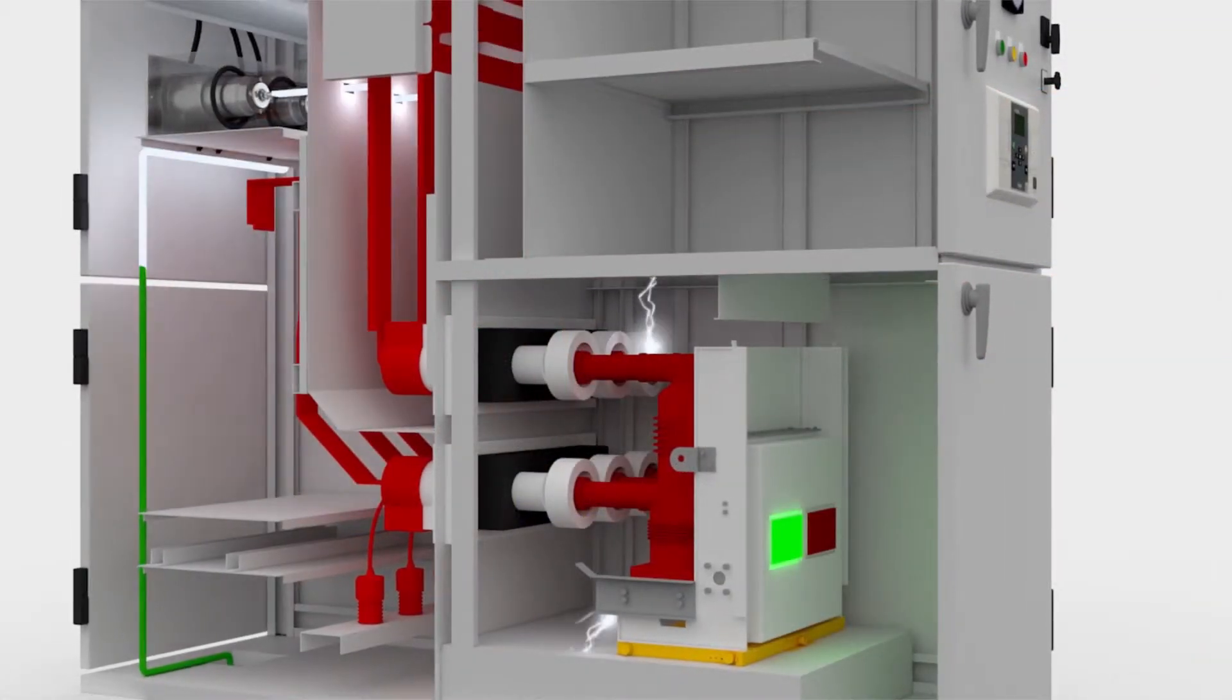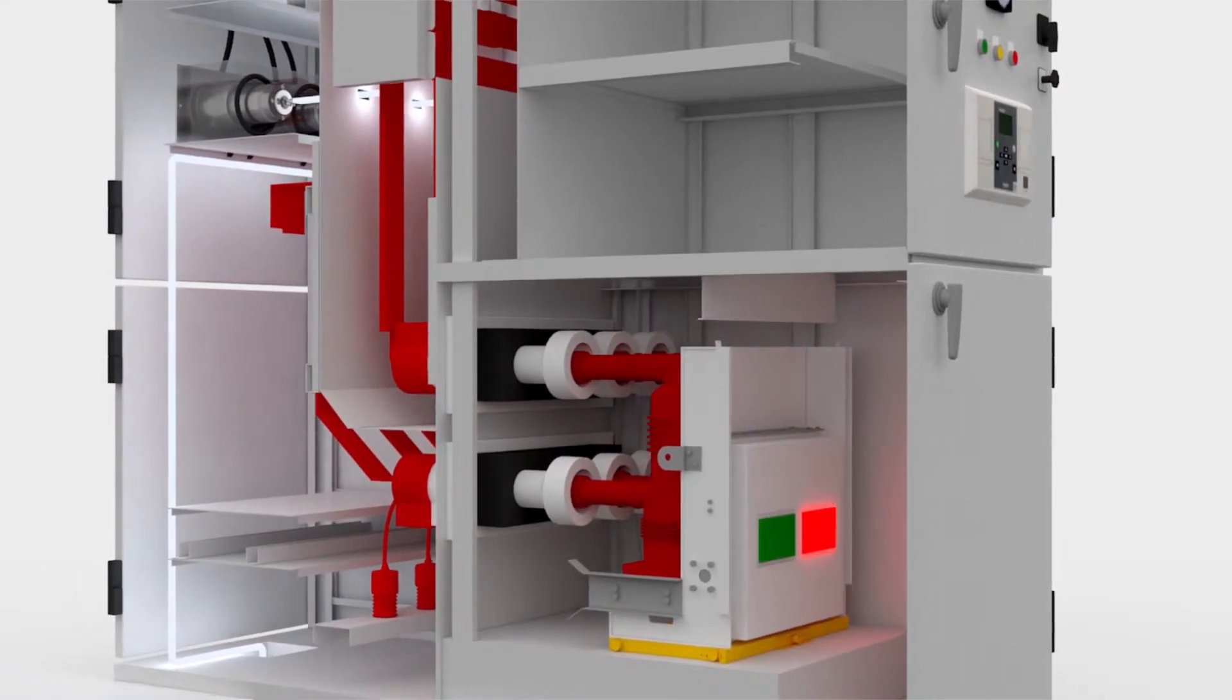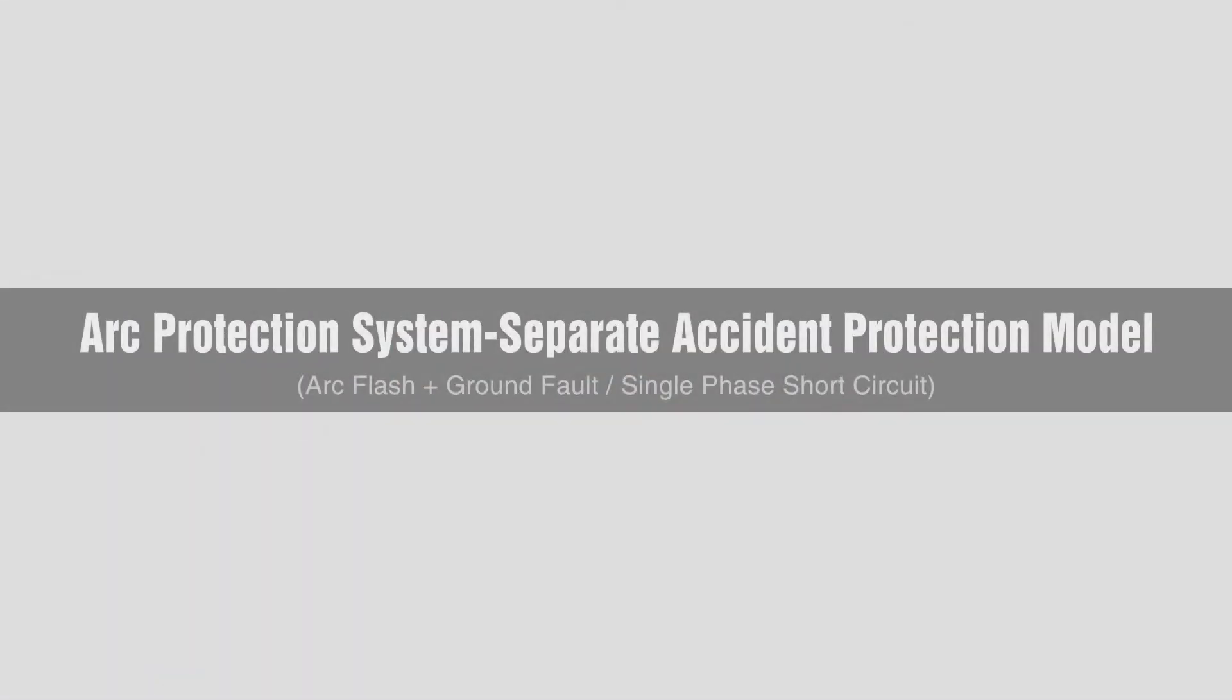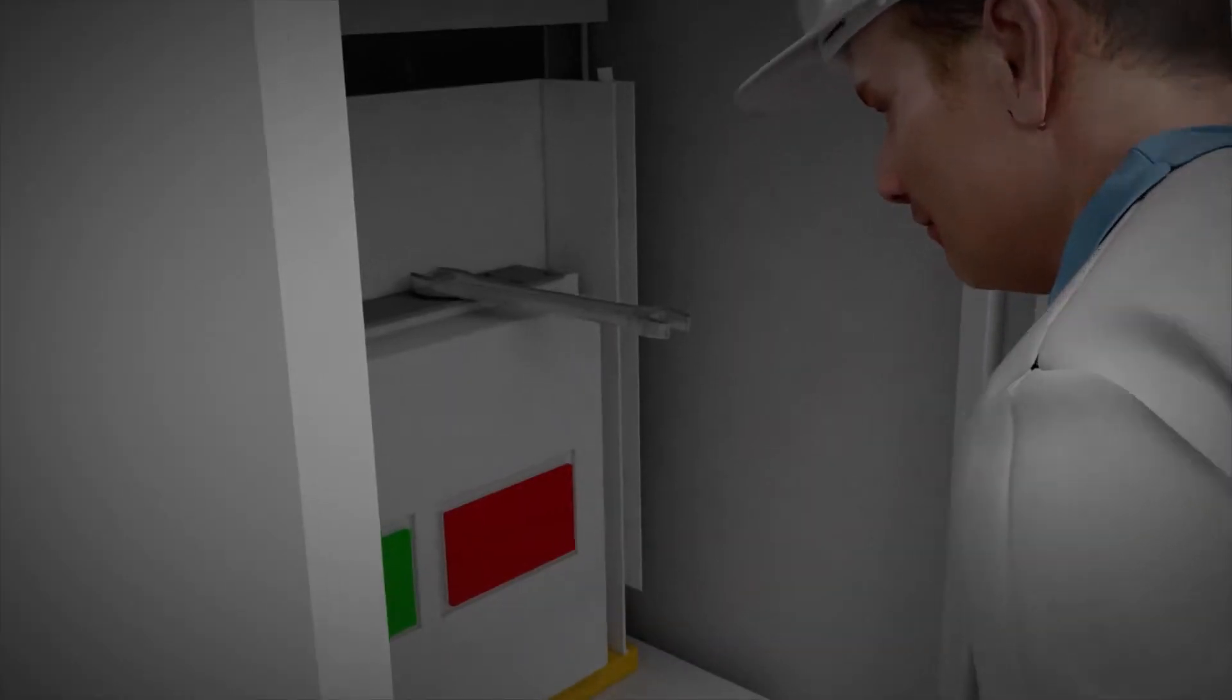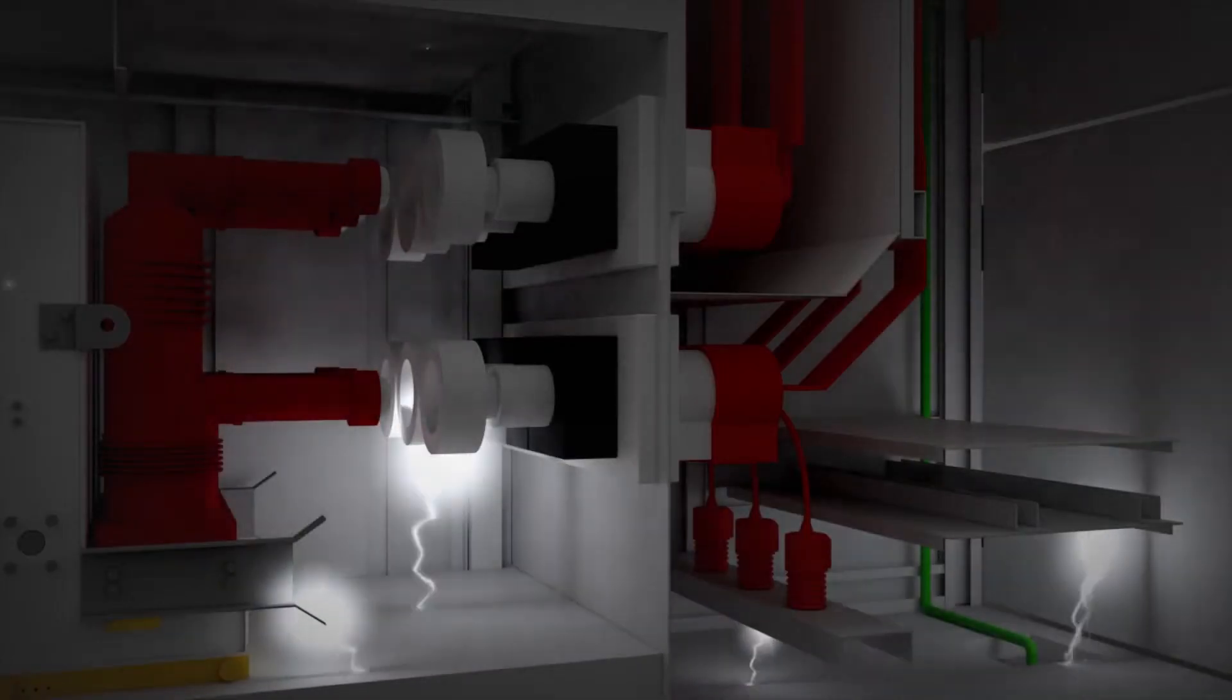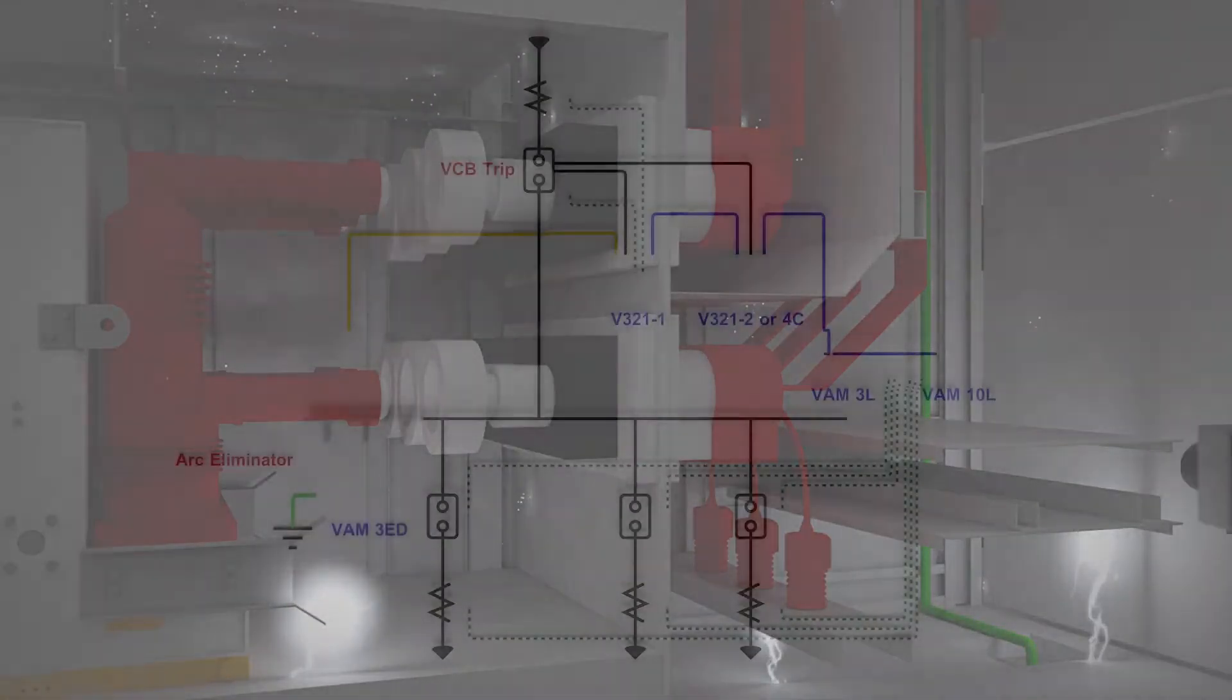The separate accident protection model uses two master arc protection relays to separately protect grounding incidents, single-phase short circuit, and three-phase short circuit accompanied by arc.